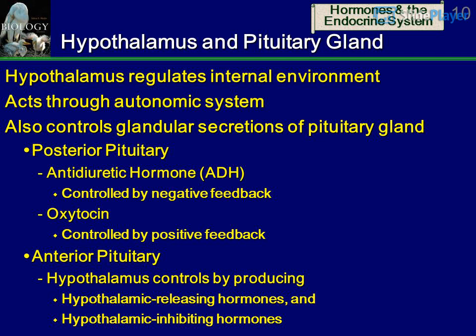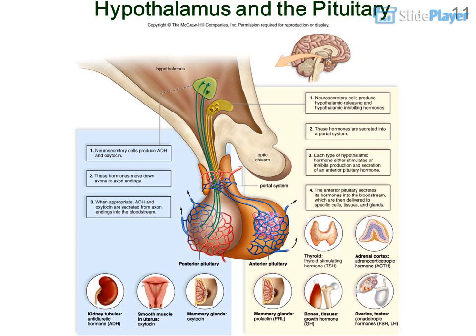Hypothalamus and Pituitary Gland: The hypothalamus regulates the internal environment, acting through the autonomic system, and also controls glandular secretions of the pituitary gland. The posterior pituitary produces Antidiuretic Hormone (ADH), controlled by negative feedback, and Oxytocin, controlled by positive feedback. The anterior pituitary is controlled by the hypothalamus through Hypothalamic Releasing and Inhibiting Hormones.